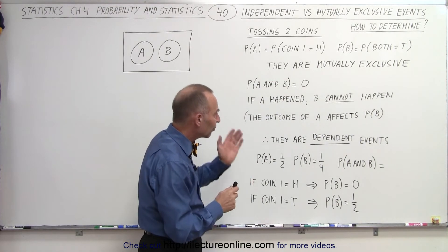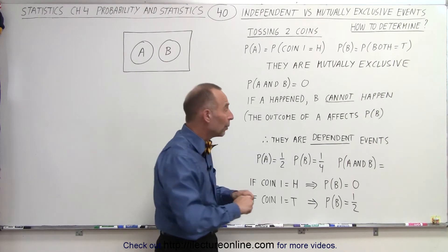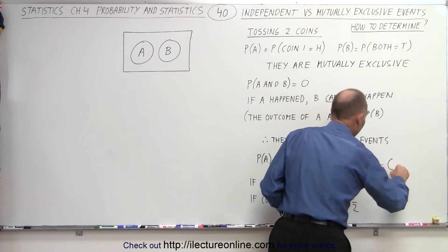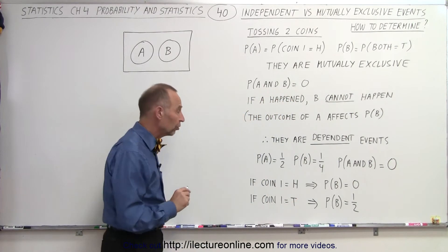Because there's only one out of four possibilities with two coins that both of them will be tails. But if we then combine the two, as we saw before, the probability of A and B, well, that's going to be equal to zero because they cannot happen at the same time. They're mutually exclusive.